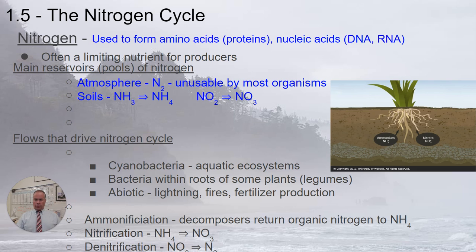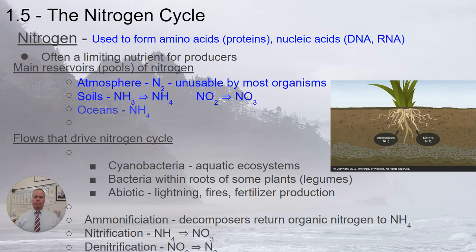There's nitrogen in the soil in various forms: ammonia and ammonium — NH3 and NH4 — as well as nitrite NO2 and nitrate NO3. Various processes within the soil can transform nitrogen through those different compounds. The oceans contain nitrogen in the form of NH4. There is also nitrogen locked up in the tissue of living organisms.